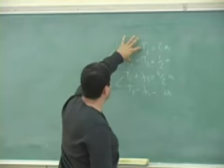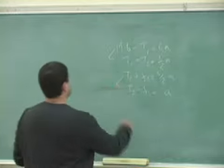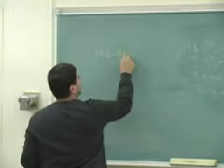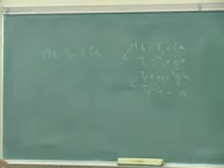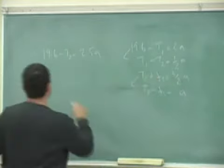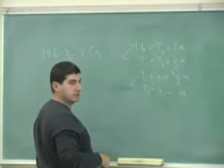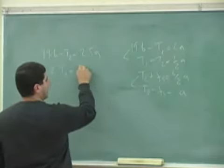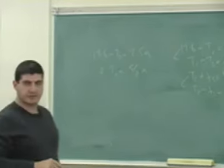So these two, you'll have 19.6 minus t2 equals to 2.5a. And then combine these two, you'll eliminate the fs. You have 2t2 equals to 3 halves a plus 1, which is 5 halves a, right? Which is actually 2 and a half, okay?